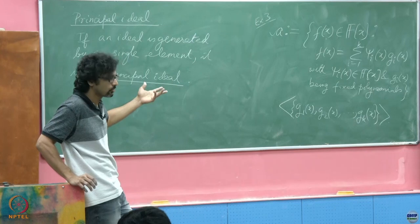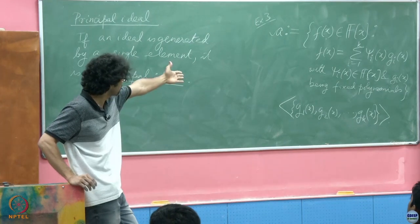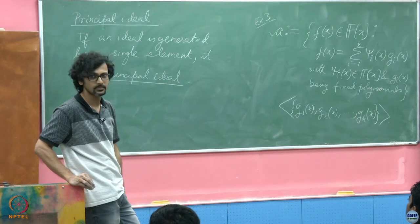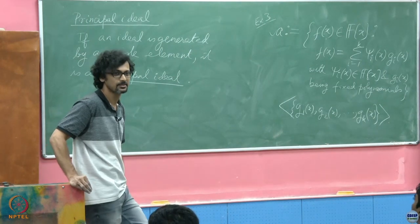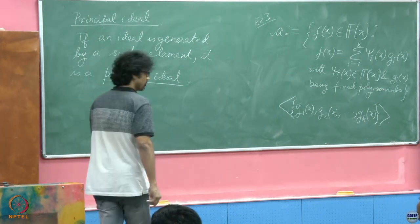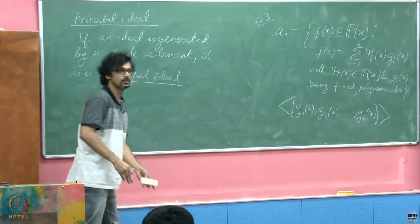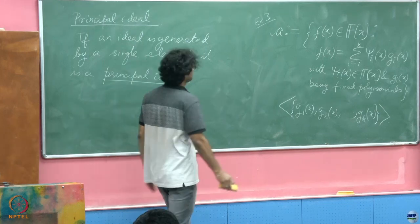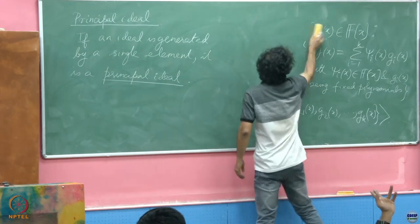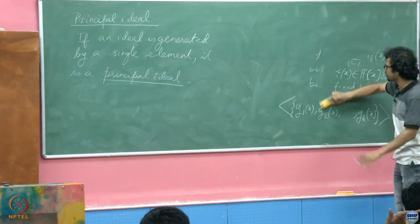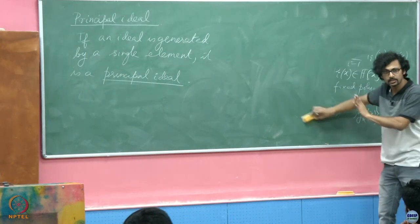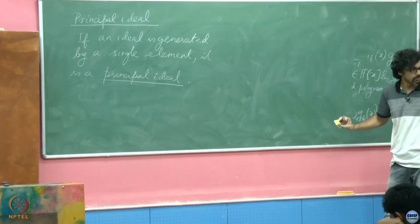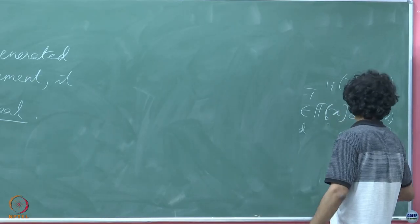Is Example 3 a principal ideal? Some of you are saying it is not a principal ideal. We shall see. At least you understand the definition of principal ideal as we have described it. Example 2 is a clear-cut example of a principal ideal — you in fact know that g is indeed its generator.